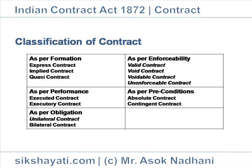As per Enforceability. Valid Contract: an agreement which satisfies all the essential legal requirements prescribed by law is called a valid contract. Void Contract: a contract which ceases to be enforceable by law becomes void. A contract which is not enforceable at the time of formation is called void ab initio. Since these cannot be enforced even at the time of formation, they cannot be called contracts — they are called void agreements.